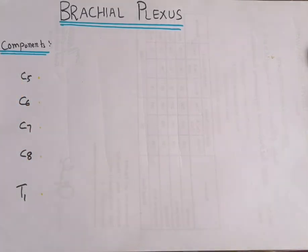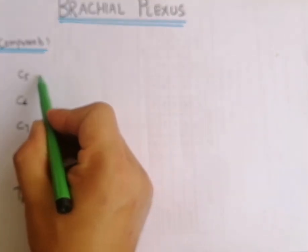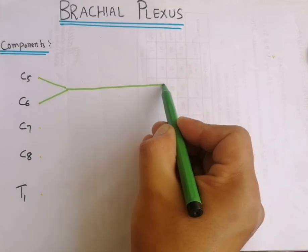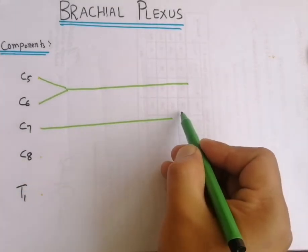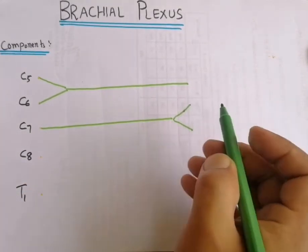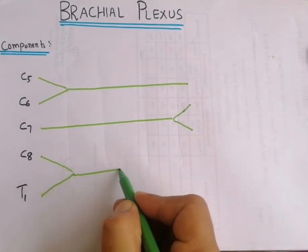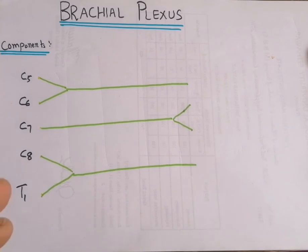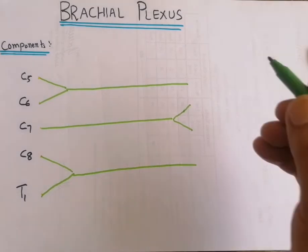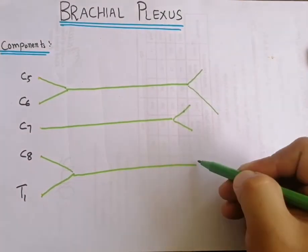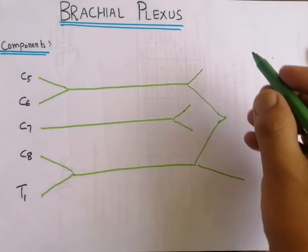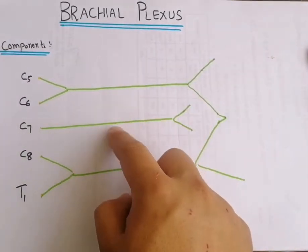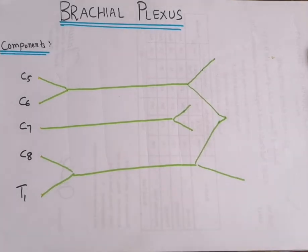Now write three Y's in this pattern — one Y, two Y, three Y's — and then write a W. So write three Y's and one W, which together represent the brachial plexus diagram.